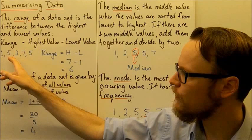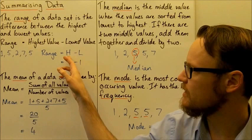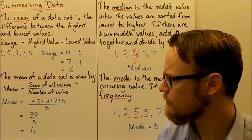So if we've got a small data set — 1, 5, 2, 7 and 5 — the range is the highest value minus the lowest value. The highest value is 7 and the lowest is 1, so we take 7 minus 1, which is 6. The range of this data set is 6. It tells us how wide the data set is, how much the values are spread out.